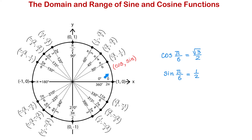This unit circle has a total of 16 angles, but we can draw any other angles too. Each angle will have a corresponding point on the unit circle. For example, we can draw any angle between 60 and 90 degrees, and this angle will have a corresponding point with coordinates x and y. If we move counterclockwise we generate positive angles, and if we move clockwise we generate negative angles. So if each angle has a corresponding point on the unit circle, this means that for any angle we will have a value for sine and cosine.